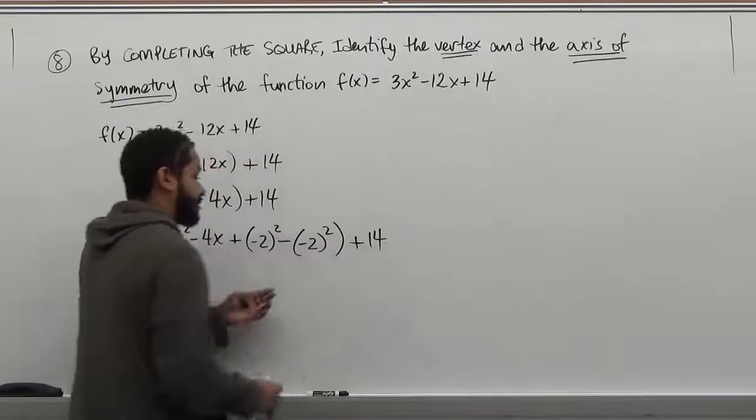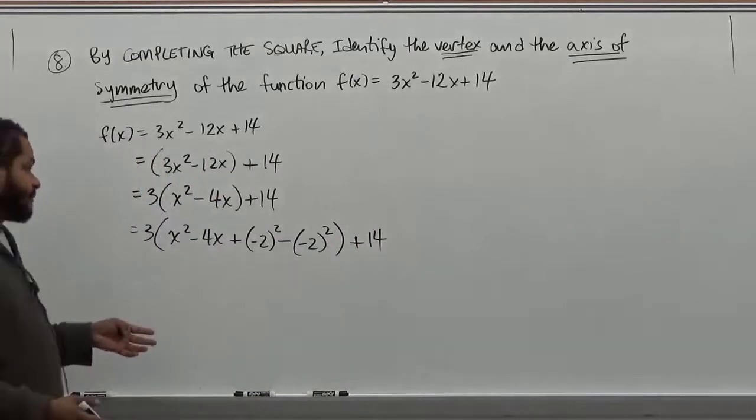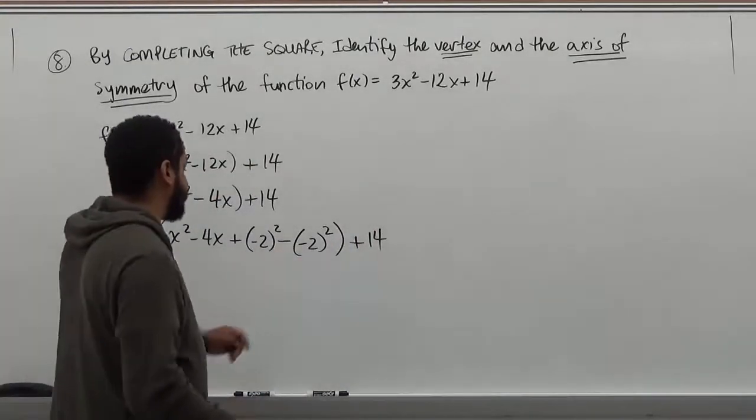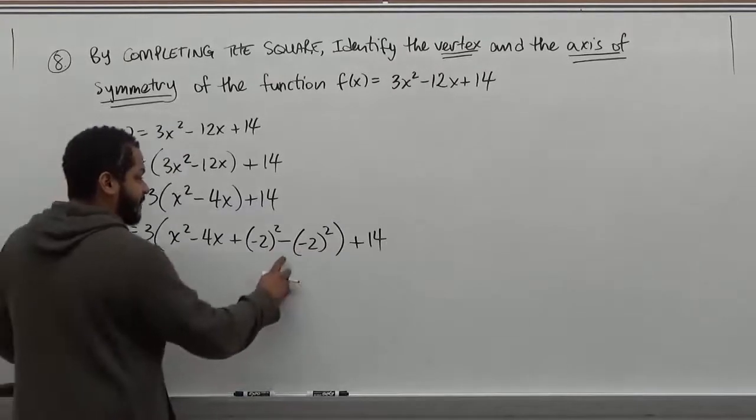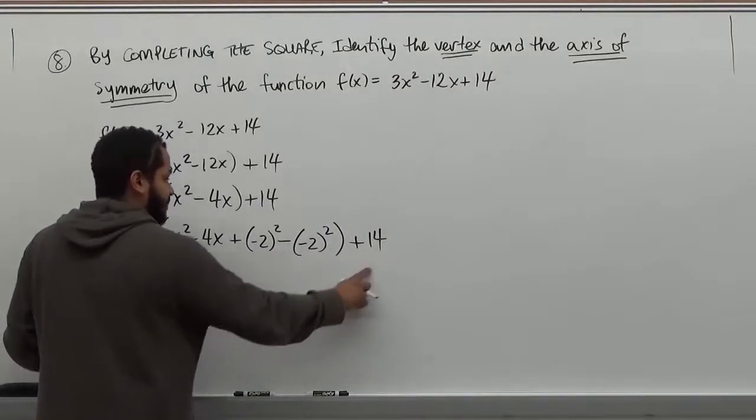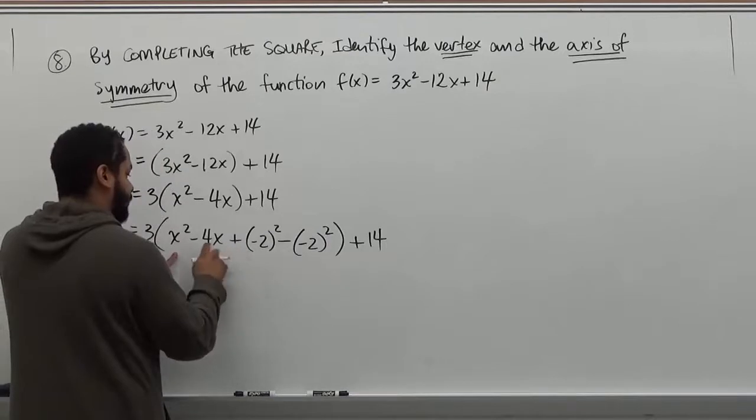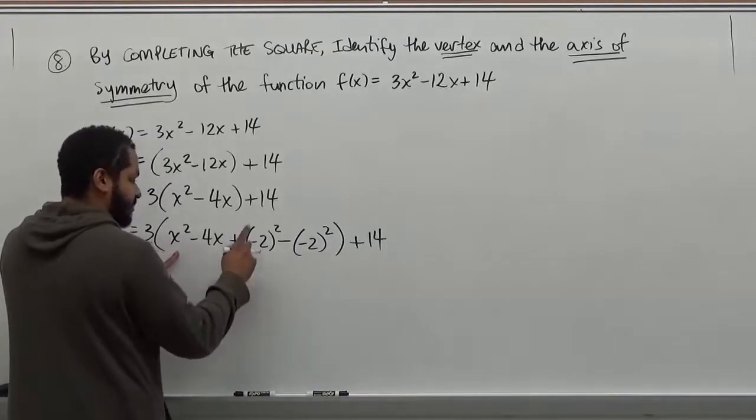So we're technically not doing anything to the problem here. What we are doing is completing the square. The next step then is to get rid of the term we don't need. The negative term is always going to come out of here because when we have a perfect square, the last term is always positive.